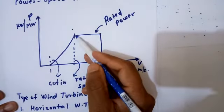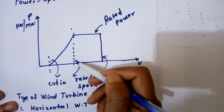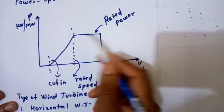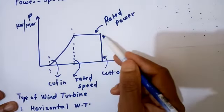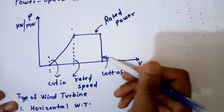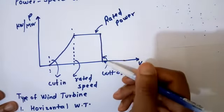After that, the rated speed is obtained, where the power becomes the rated power. Then, if over-speed occurs, there will be a cut-off condition. The cut-off point will be there, and the braking system will be activated.